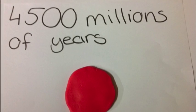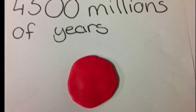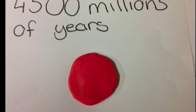4,500 million years ago, the Earth is formed. It is a ball of molten material lacking water and an atmosphere. Life is impossible in these conditions.